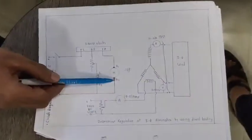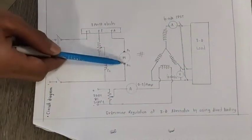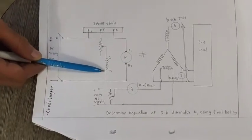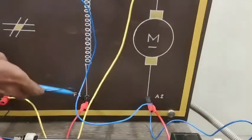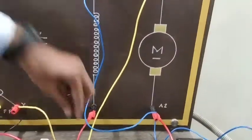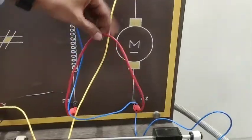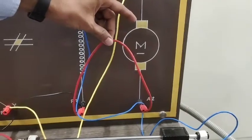Then you can see here A2 and F2 are short circuited. We are short circuiting A2 and F2. You can see this is the link provided between A2 and F2.